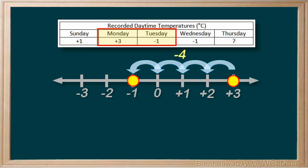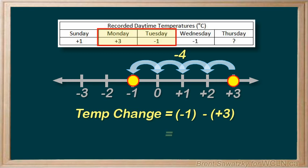To use equations we'd have Tuesday's temperature minus Monday's temperature, or negative one minus plus three. To remove the brackets we'd have a minus one and the minus plus is the same as a minus. So minus one minus three equals minus four or negative four. Again the results agree.